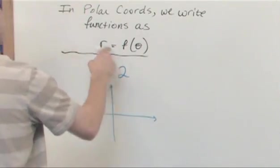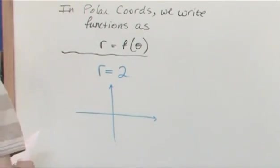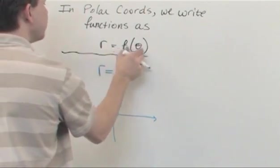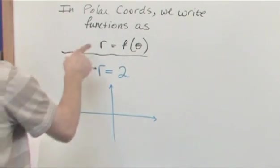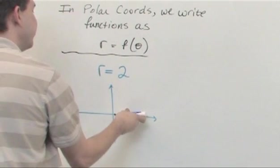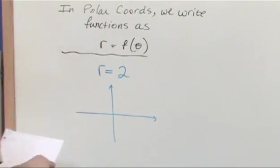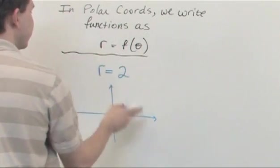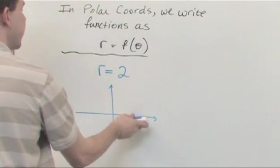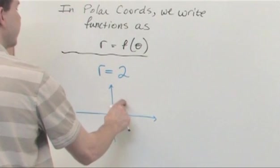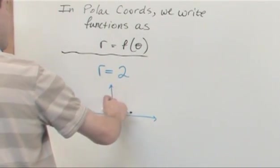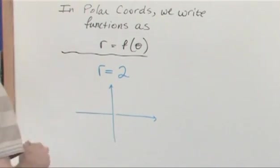Now, notice I said that in general, r is a function of theta. So in general, what I'm saying is that as you start here and trace out theta, as you go all the way around the xy plane like this, r is going to change. It's going to be a function of theta. As you sweep theta, r might be this big, and as you increase theta, r might get bigger and smaller and bigger and smaller, and you trace out a function.